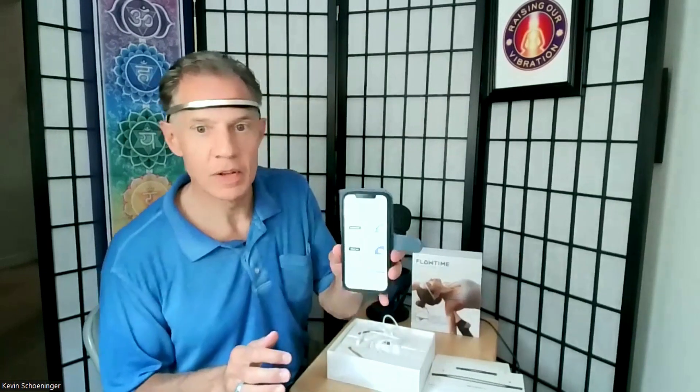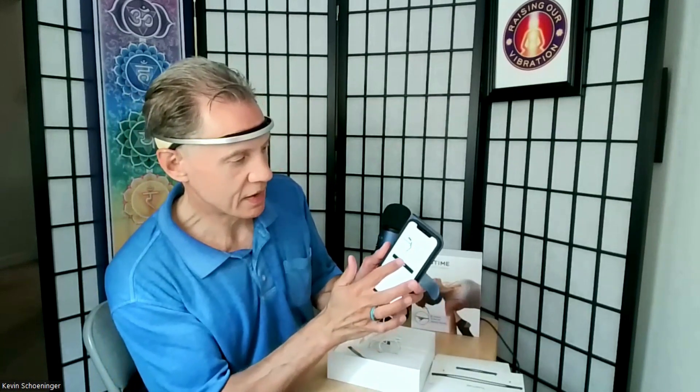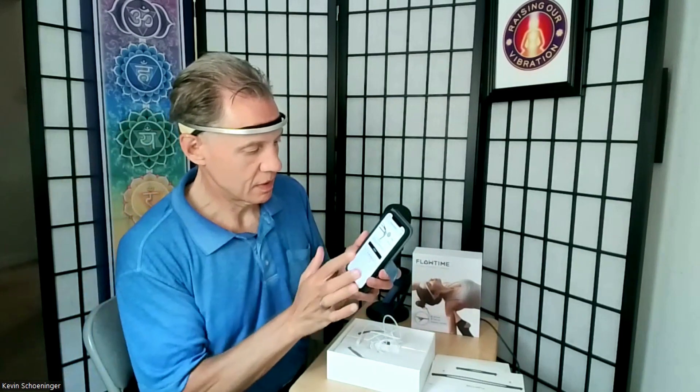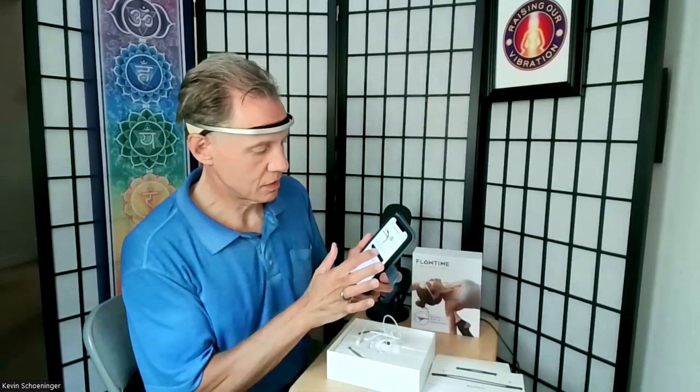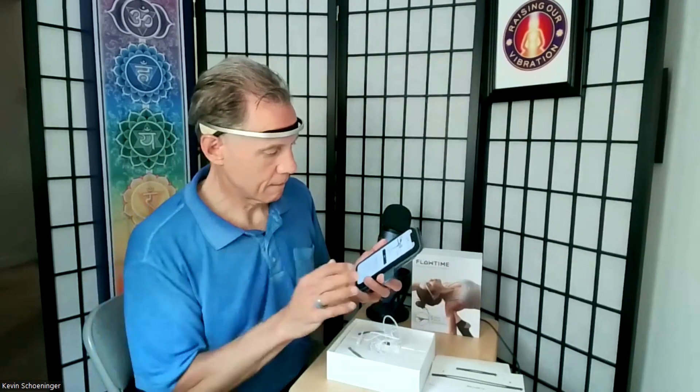But anyway, let's see if we can turn it on and hook up the Flowtime app. In the Flowtime app, in the upper right corner, there's a little headset there. You touch that. It says connect, turn on the power button on the back right, click that, and connect. Okay, it looks like I need to power up the device.